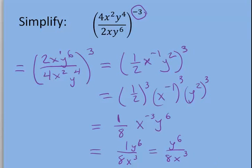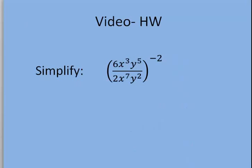All of our powers are positive. There are no negative exponents. And we have only one of each variable appearing, so we have simplified this completely. Now, you try the next one on your own.